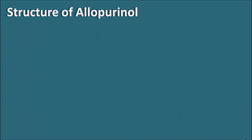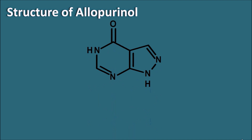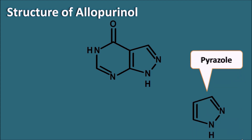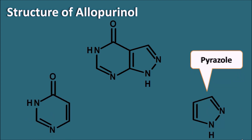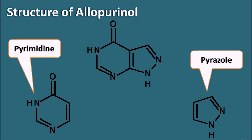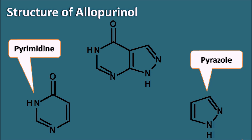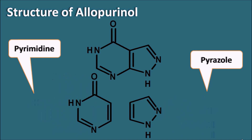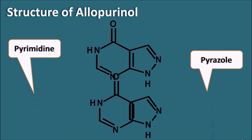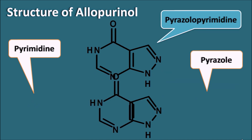Now let us see the structure of allopurinol. This structure is made up of the fusion of two ring systems — one is the pyrazole and another is the pyrimidine. Allopurinol is fused with pyrimidine and pyrazole, which is why it is called a pyrazolo-pyrimidine.